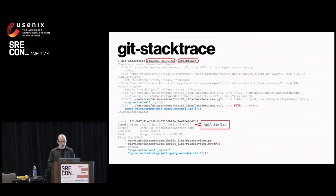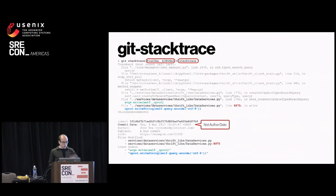Previously we'd look at the stack trace, guess the problem might be in data services or user manager, look around different files, take a few minutes guessing across 70 commits. Now we have one, two, or three commits to quickly scan, see why they're referenced, and pick the one most likely to have caused the issue.